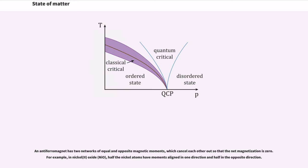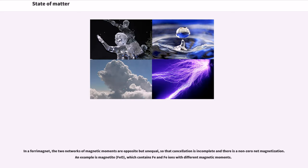An anti-ferromagnet has two networks of equal and opposite magnetic moments, which cancel each other out so that the net magnetization is zero. For example, in nickel(II) oxide, NiO, half the nickel atoms have moments aligned in one direction and half in the opposite direction. In a ferrimagnet, the two networks of magnetic moments are opposite but unequal, so that cancellation is incomplete and there is a non-zero net magnetization. An example is magnetite, Fe₃O₄, which contains Fe²⁺ and Fe³⁺ ions with different magnetic moments.